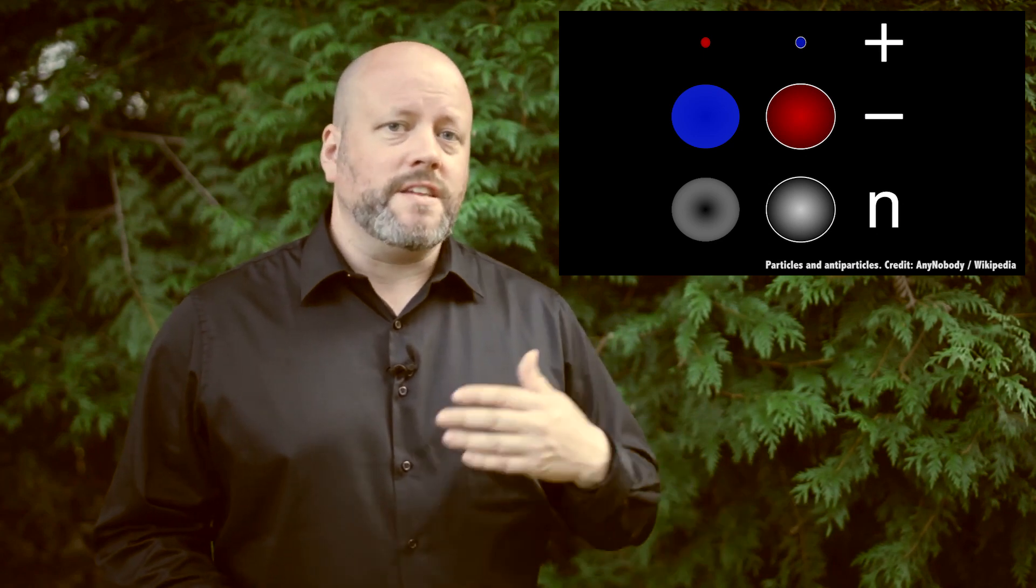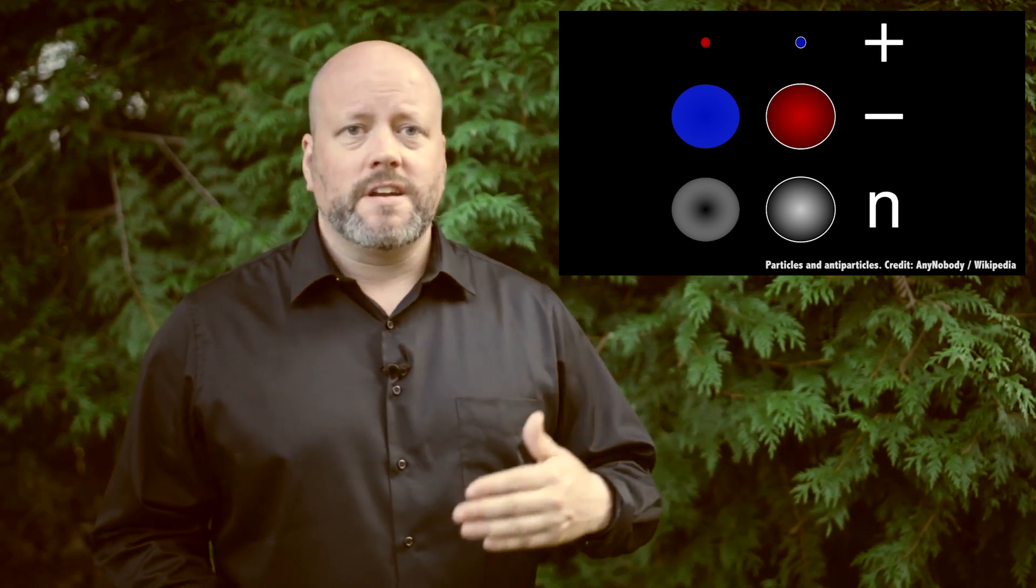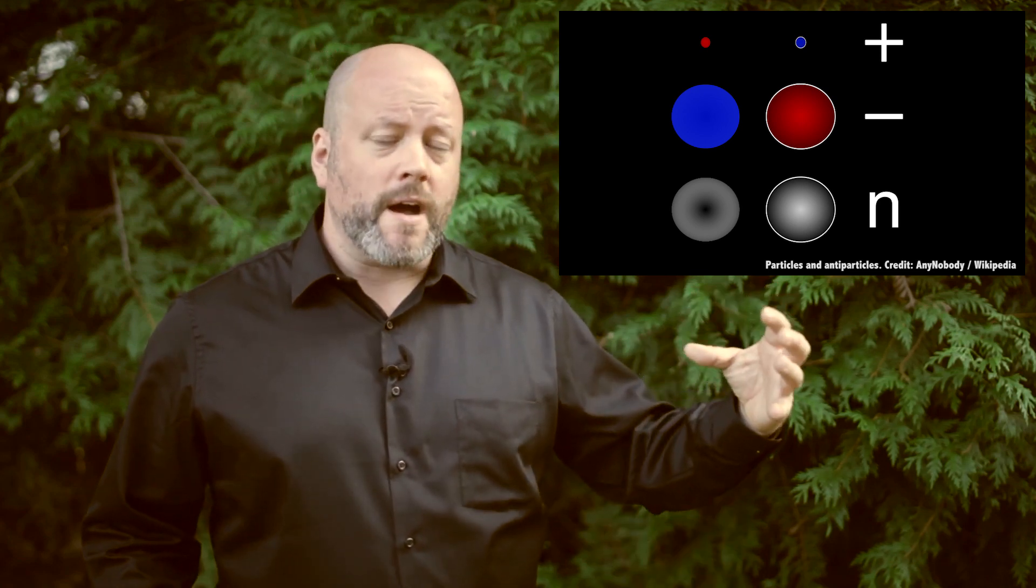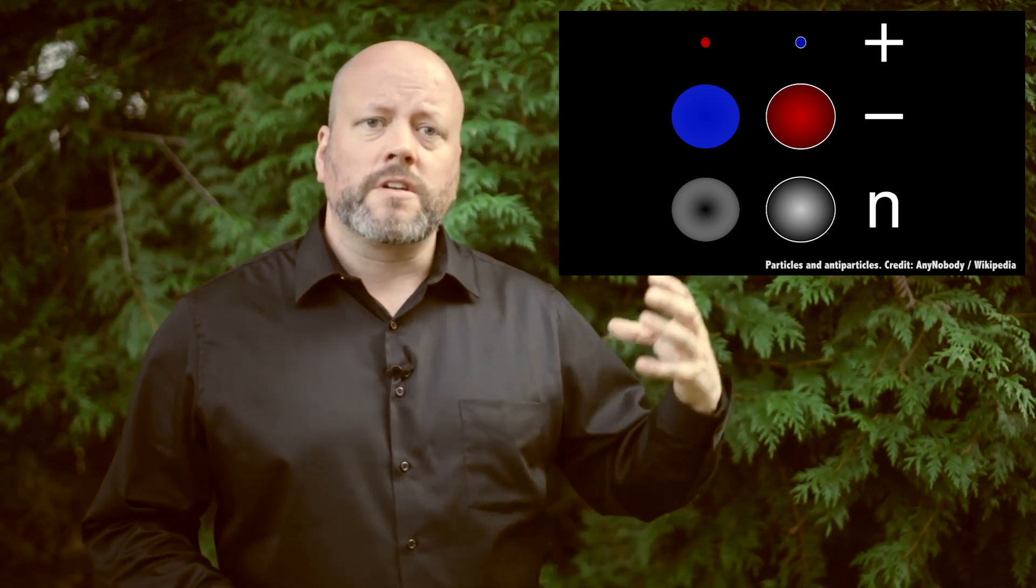An anti-electron has the exact same amount of mass as an electron. And here's the part you care about. When equal amounts of matter and antimatter collide, they're annihilated. But not disappeared or cancelled out. They're just converted into pure energy. As Einstein explained to us, mass and energy are just different aspects of the same thing. You can turn mass into energy, and you can turn energy into mass.